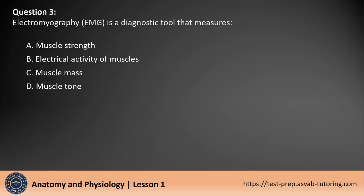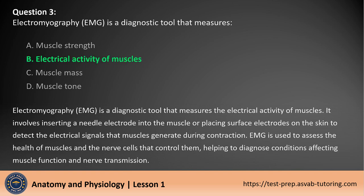Question 3. Electromyography, EMG, is a diagnostic tool that measures the electrical activity of muscles. It involves inserting a needle electrode into the muscle or placing surface electrodes on the skin to detect the electrical signals that muscles generate during contraction. EMG is used to assess the health of muscles and the nerve cells that control them, helping to diagnose conditions affecting muscle function and nerve transmission.